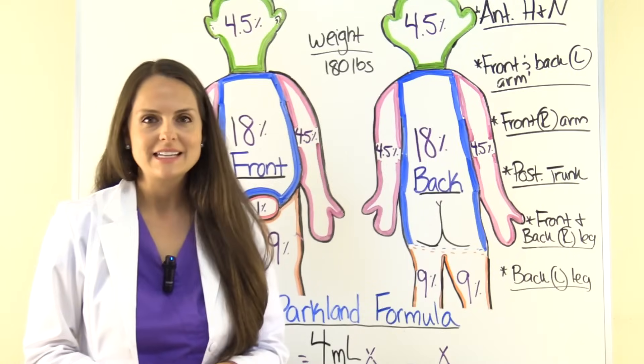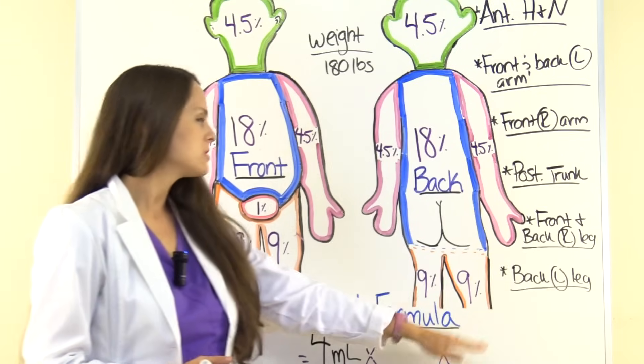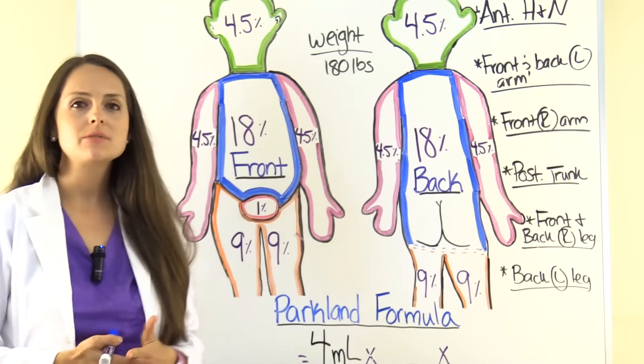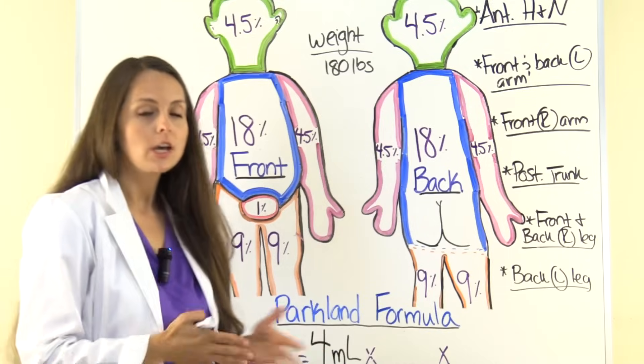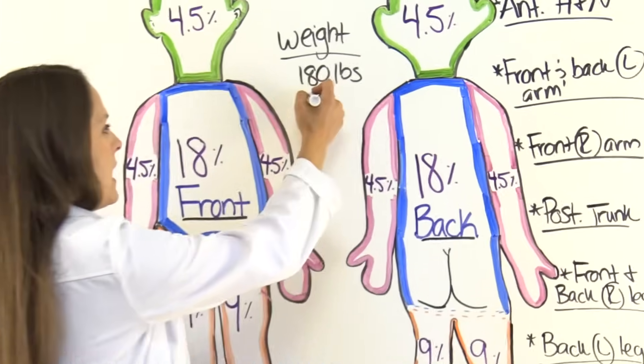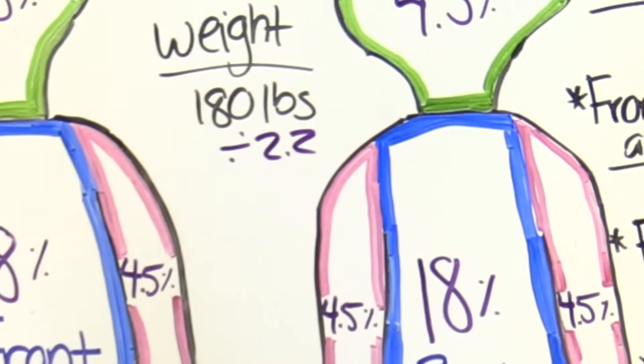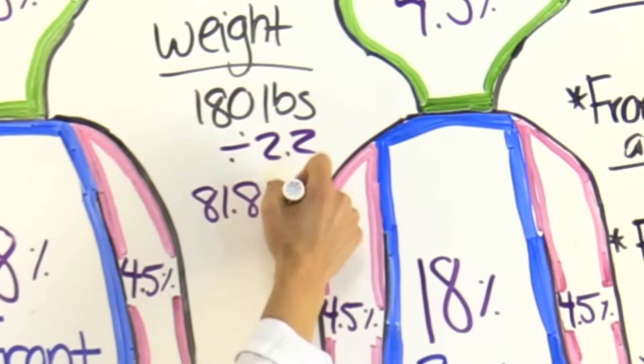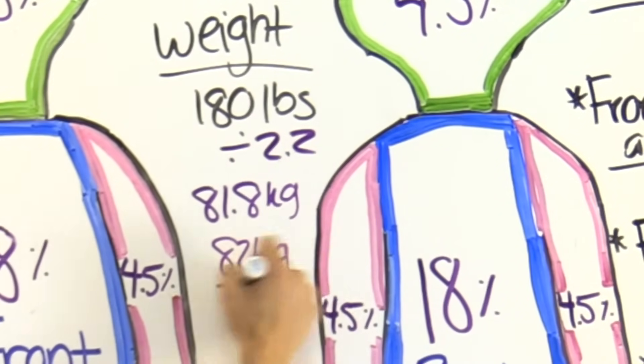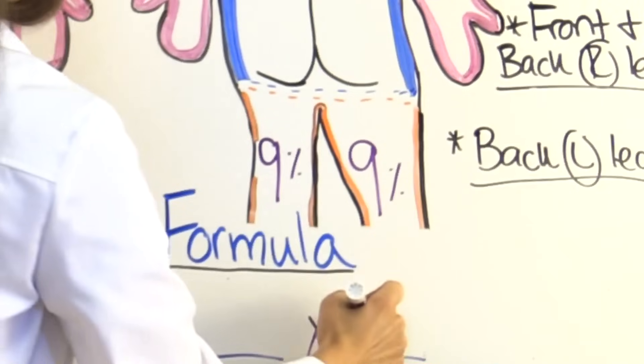So to solve, let's do the easiest thing first. Let's figure out our patient's weight in kilograms, because they gave it to us in pounds. So to convert to kilograms, we're going to divide by 2.2, and 180 divided by 2.2 gives us 81.8 kilograms, and we're going to round up to 82 kilograms. So our patient weighs 82 kilograms.